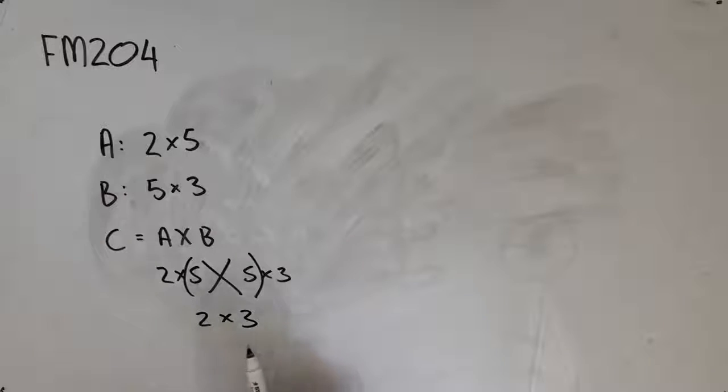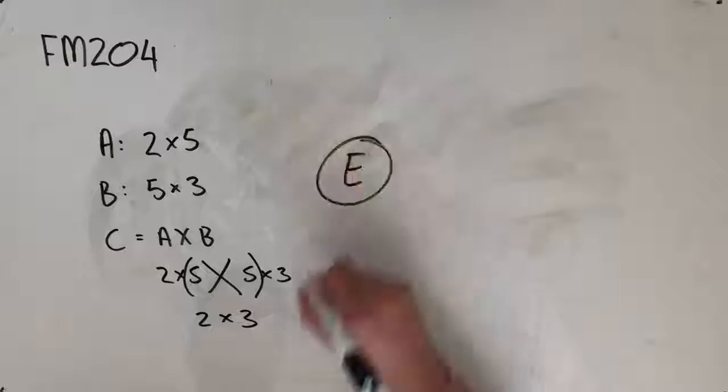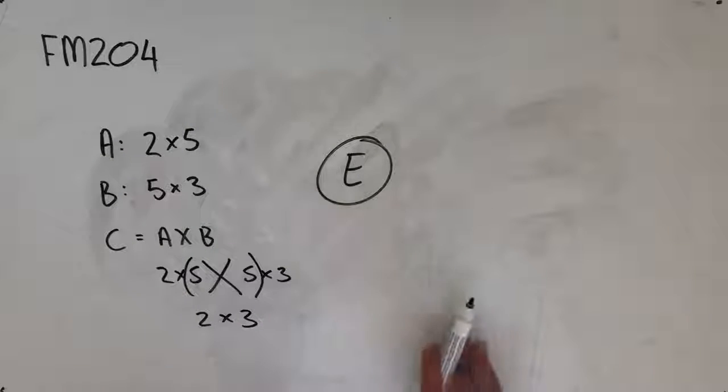So C is a two by three matrix, meaning that option E satisfies our answer. Two rows and three columns.